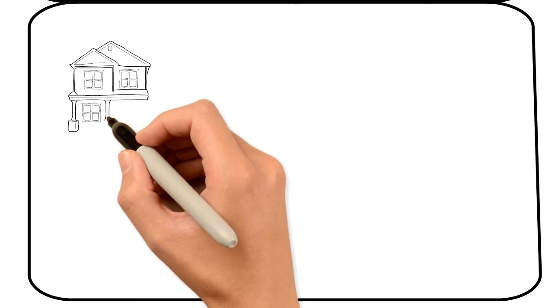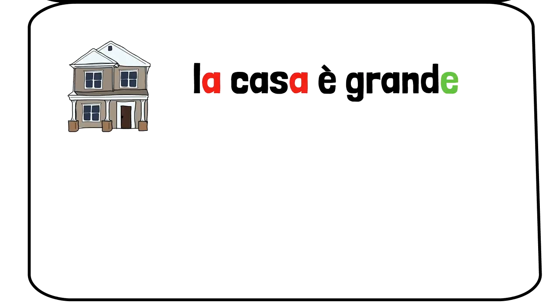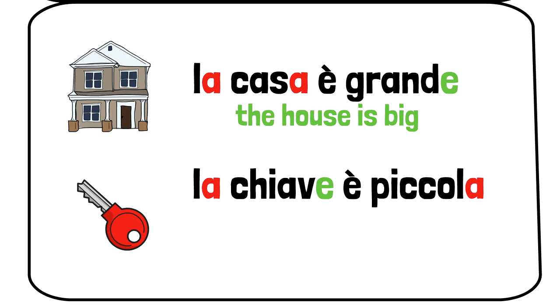Now we will practice by putting everything together within a sentence. Com'è la casa? La casa è grande. The house is big. Com'è la chiave? La chiave è piccola. The key is small.